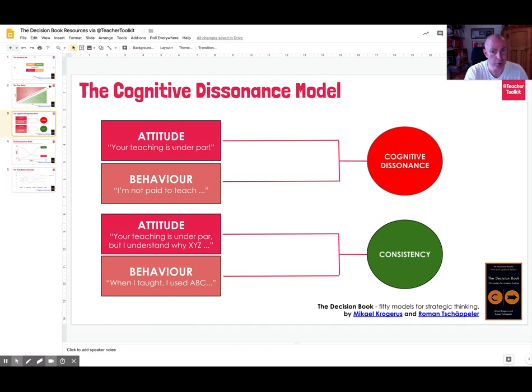However, if you are working with someone where they are more consistent with working out the differences between the things that you say in your disagreements, someone might say, your teaching's under par, Ross, but I understand why, X, Y, Z. So then they would model this through their behaviours. When I taught, it was X, Y, Z, but let's work out some solutions. So if that happens, then you're probably working with someone who's not experiencing cognitive dissonance, they're not finding it difficult to disagree with you, but they're offering some suggestions, and it's a nice way to look at that.